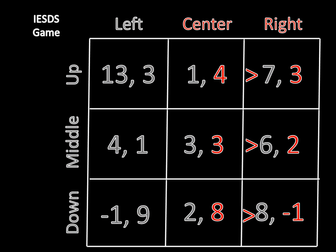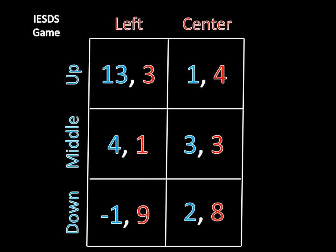Take a look at center and right for player two. You should notice that center strictly dominates right. Four is greater than three, three is greater than two, and eight is greater than negative one. Thus, we can say that center strictly dominates right. The neat thing is that when you know this piece of information, we can convert the matrix. Basically, I'm saying we can ignore right for all intents and purposes, and treat this 3x2 matrix as a legitimate representation of the previous game.